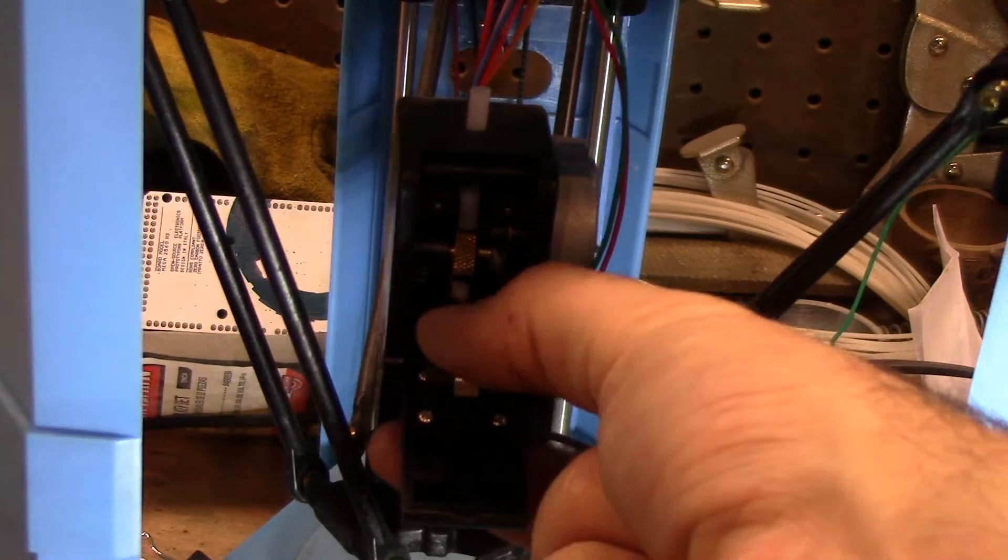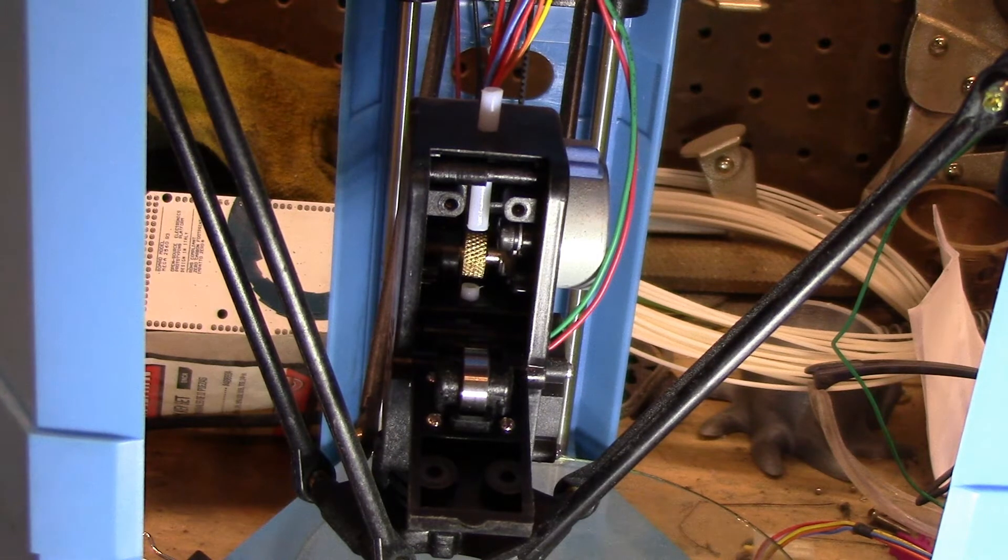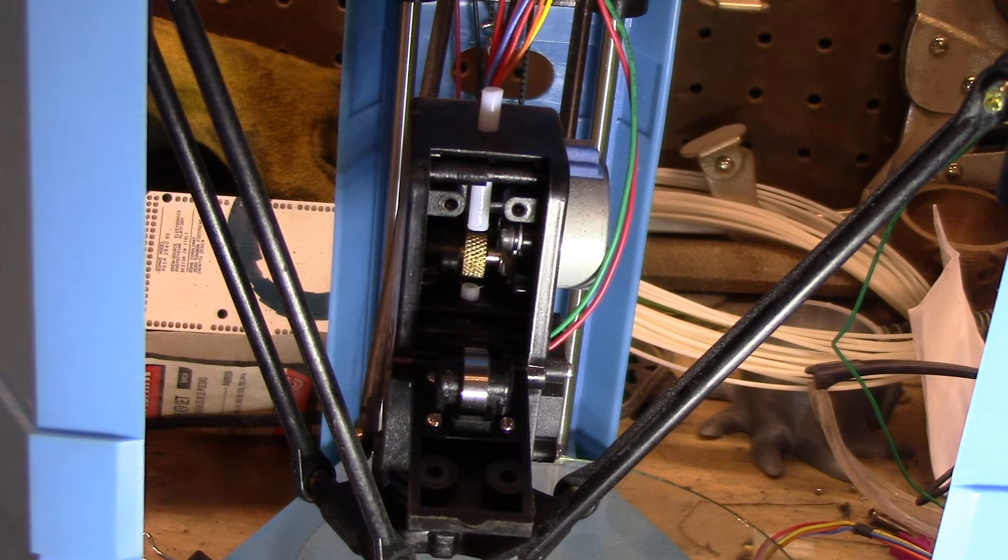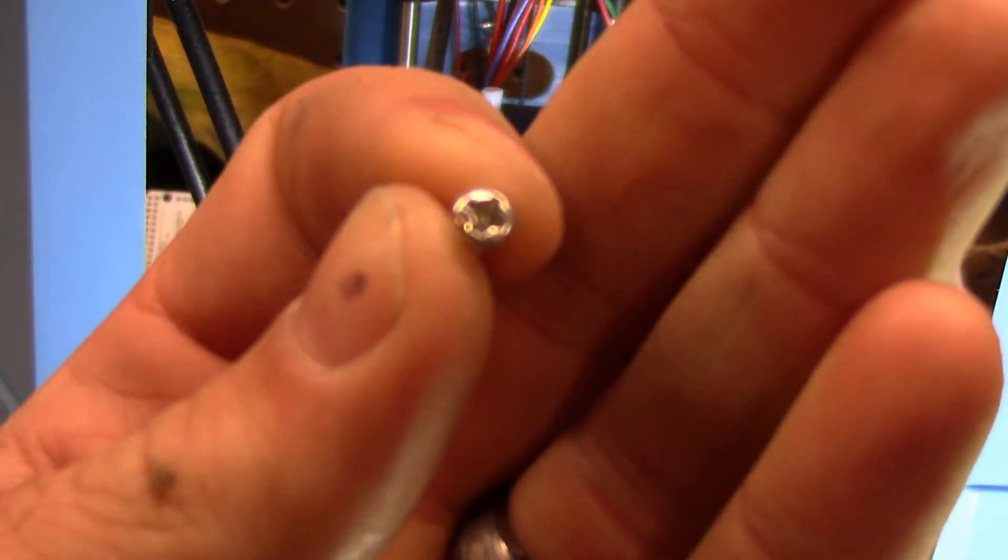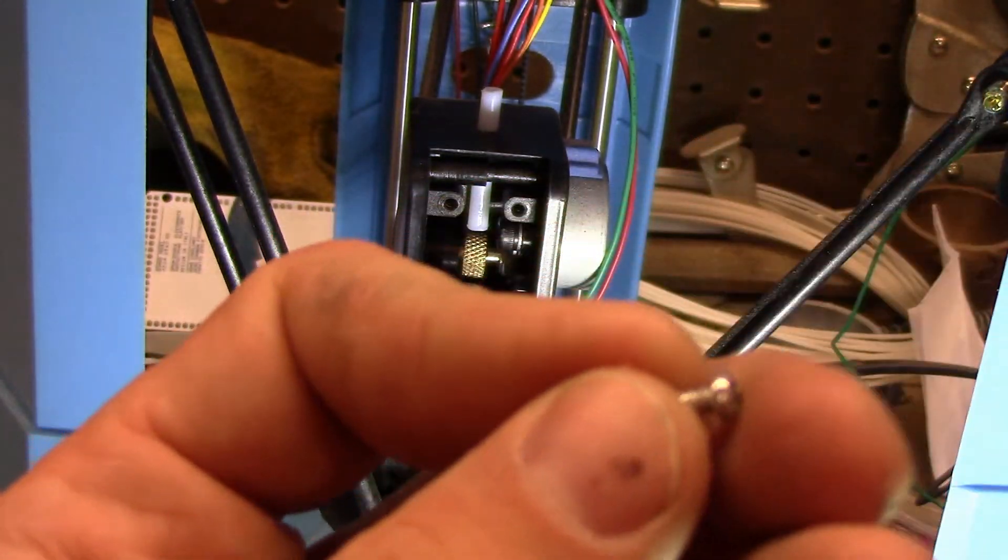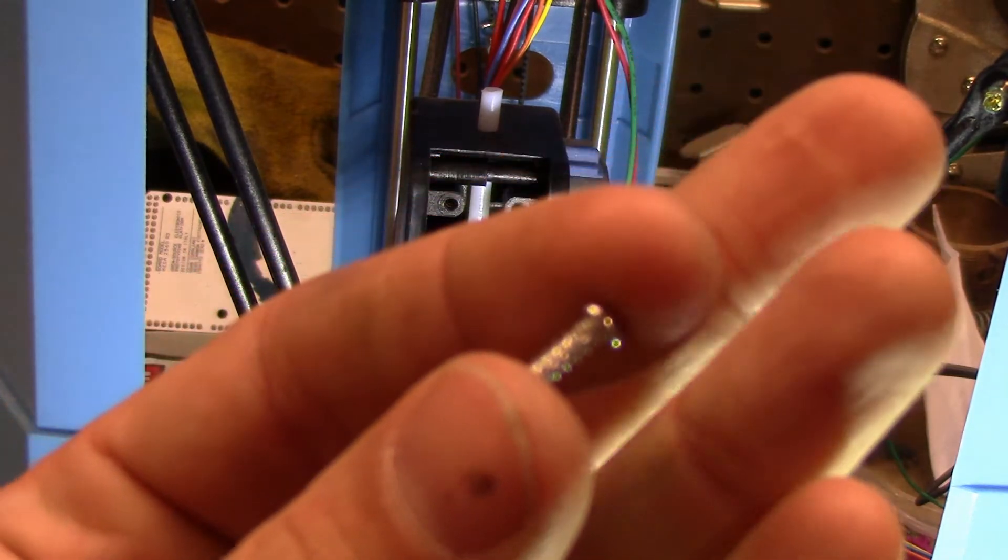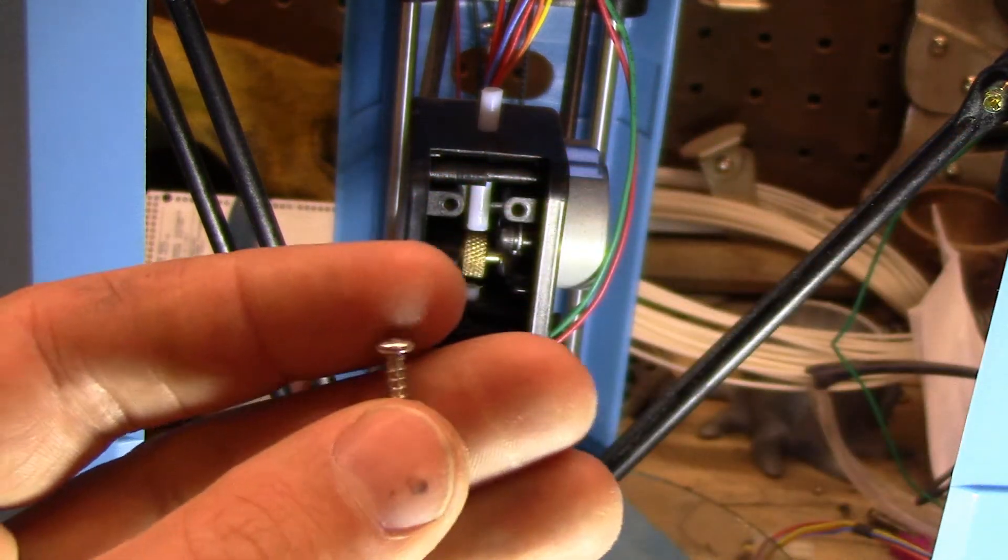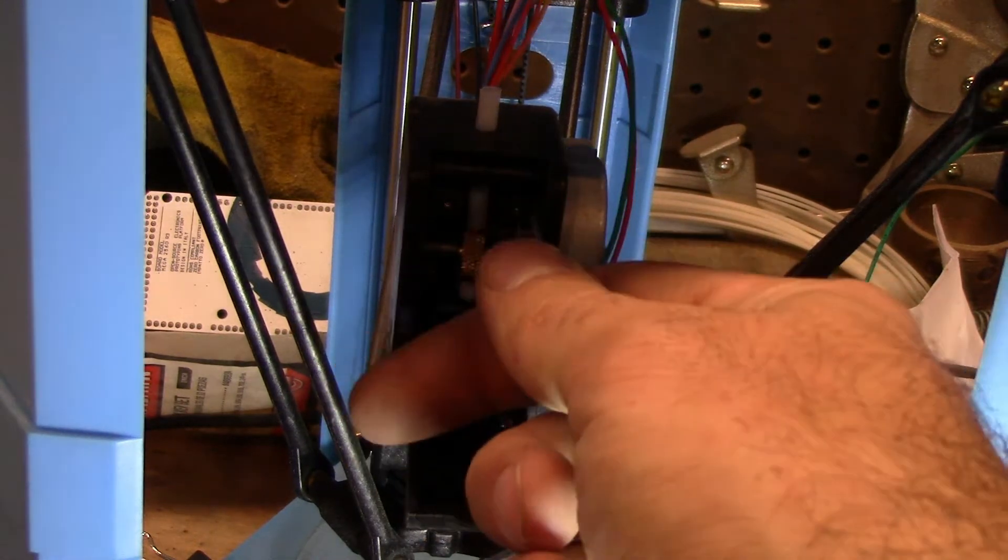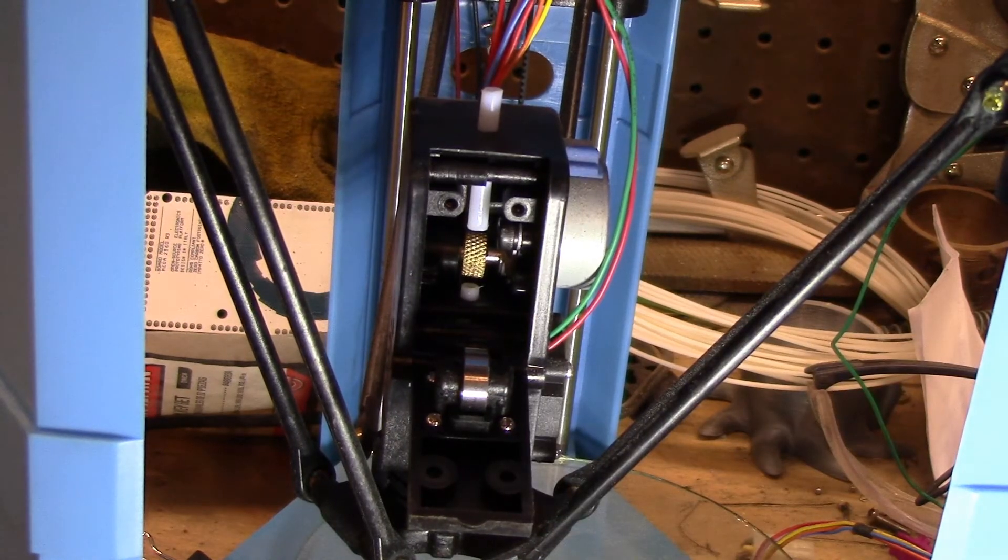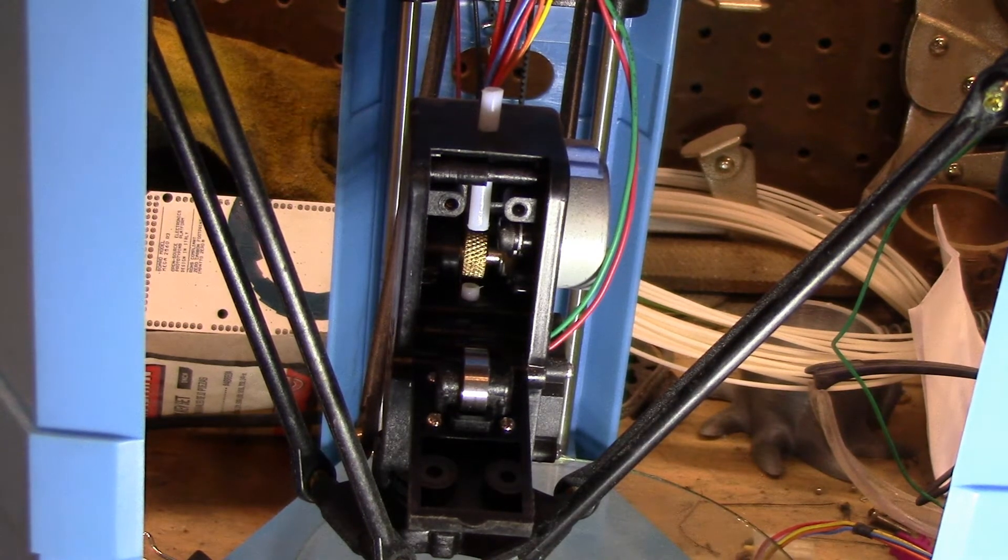Something very common are these screws for the printhead. They are extremely brittle, it's very easy to strip them out, and they're also just sheet metal screws. The holes can get stripped out, that goes into the hot end. There's two solutions for that.